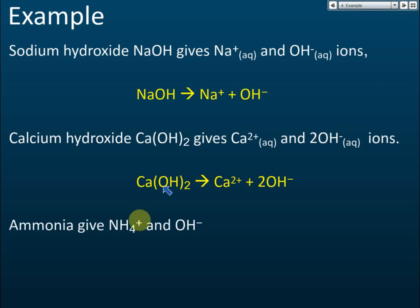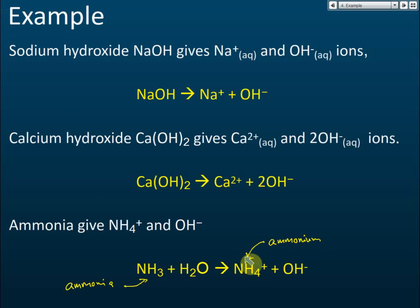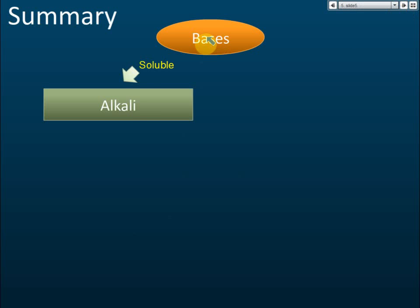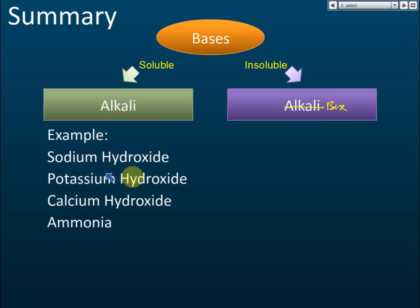As shown, ammonia (NH₃) dissolved in water forms ammonium ions (NH₄⁺) and hydroxide ions. Note the difference: NH₃ is called ammonia, while NH₄⁺ is called ammonium. In summary, a base that is soluble in water is called an alkali; if it is insoluble in water, it remains just a base. Examples of alkalis include sodium hydroxide, potassium hydroxide, calcium hydroxide, and ammonia.